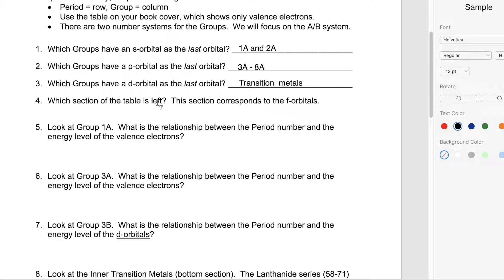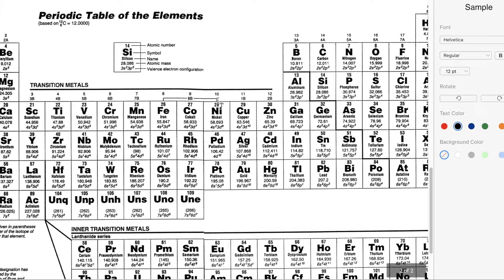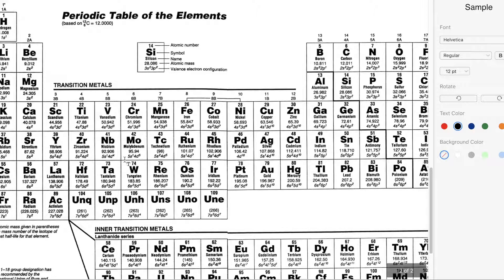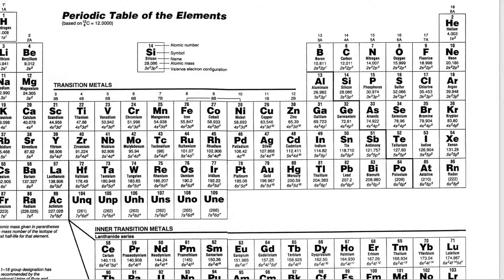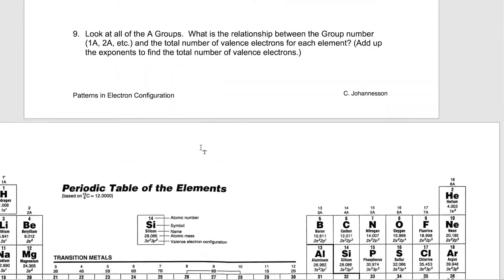And which section is left? We've got all these guys, all those guys, all those guys. The only ones left are these guys — the inner transition metals right there. We could have given the elements numbers 58 through 71 and then 90 through 103, but we'll just call them the inner transition metals.